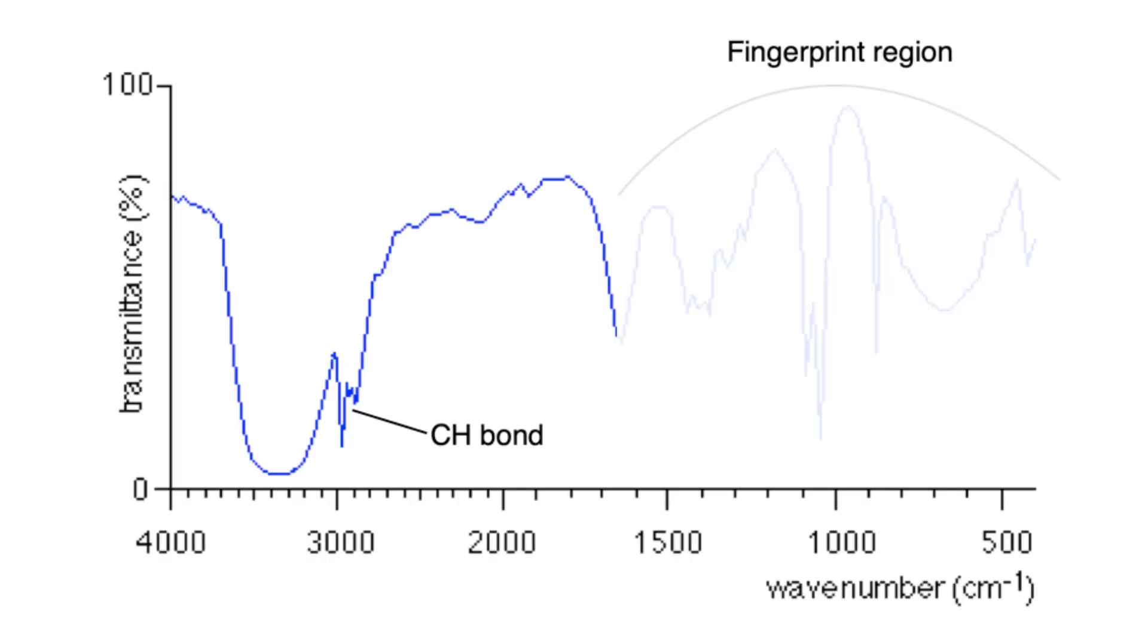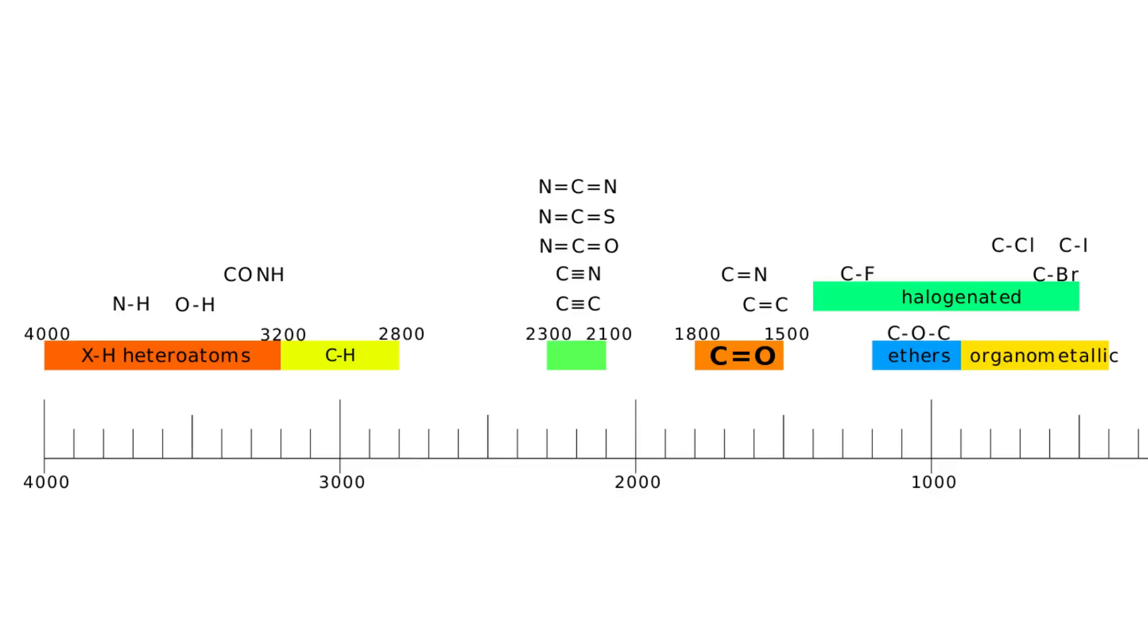This is immediately followed by a broad dip between 3200 to 3600 but more precisely I'd say 3400 to 3600 around there. If we again look from the correlation table this will correspond to an alcohol group.